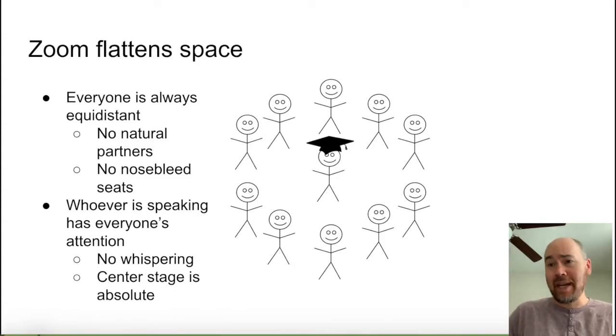And what happens in Zoom is all of this gets flattened. Everyone is always equidistant from everyone else. And this diagram doesn't really do it justice. Whoever's the speaker is always the center of everyone's attention, but the people are equidistant from each other, which this graph doesn't capture at all. Any classmate is the same distance from every other classmate. There are no natural partners who are sitting together. Conversely, there are no nosebleed seats because no one is any further from the professor or whoever's talking than anyone else is.